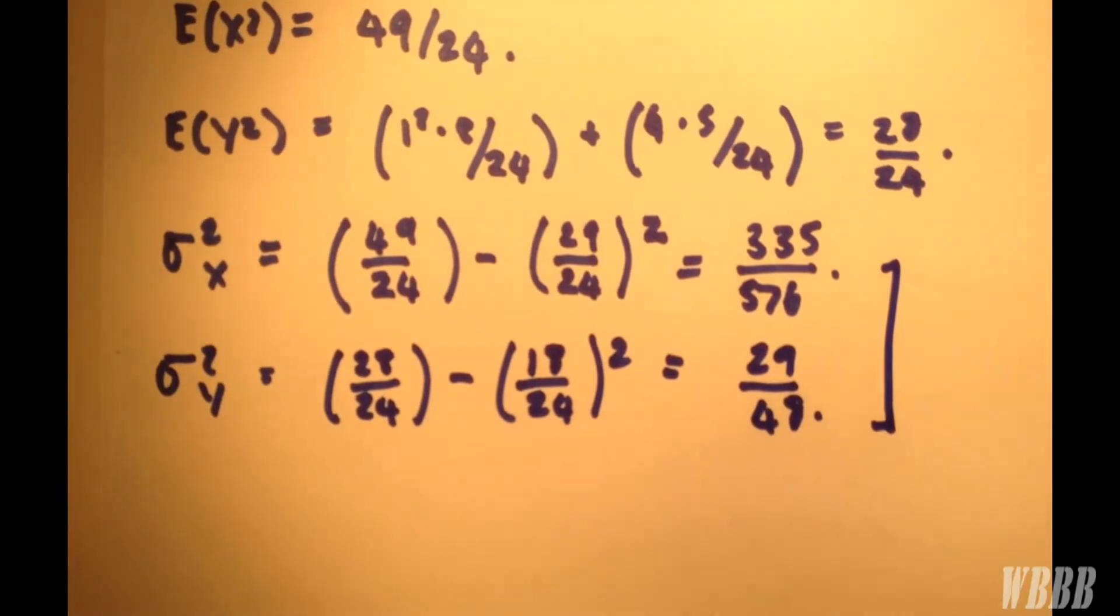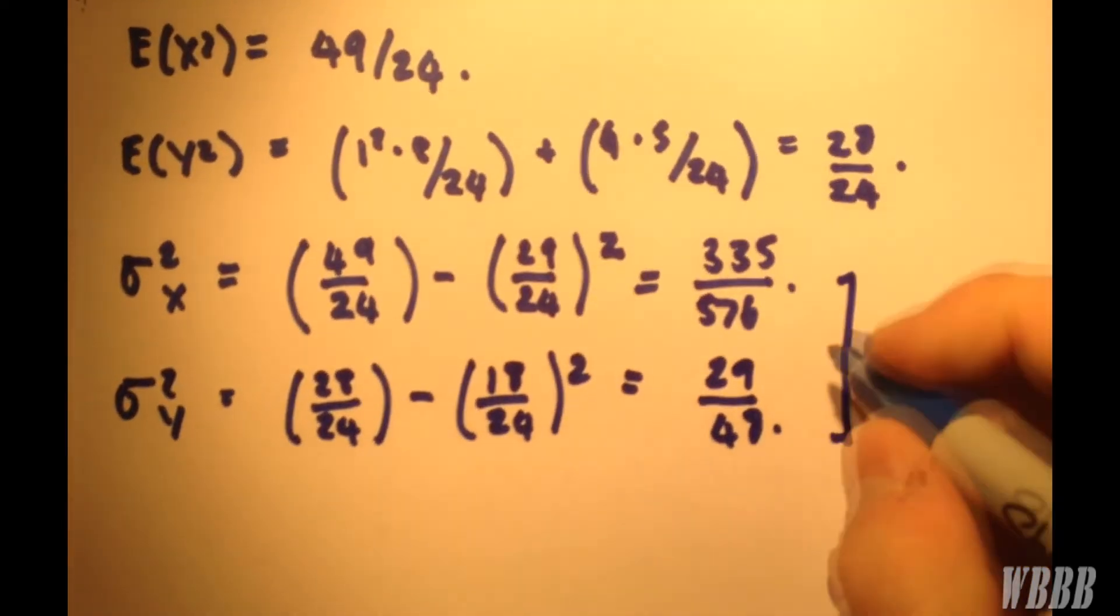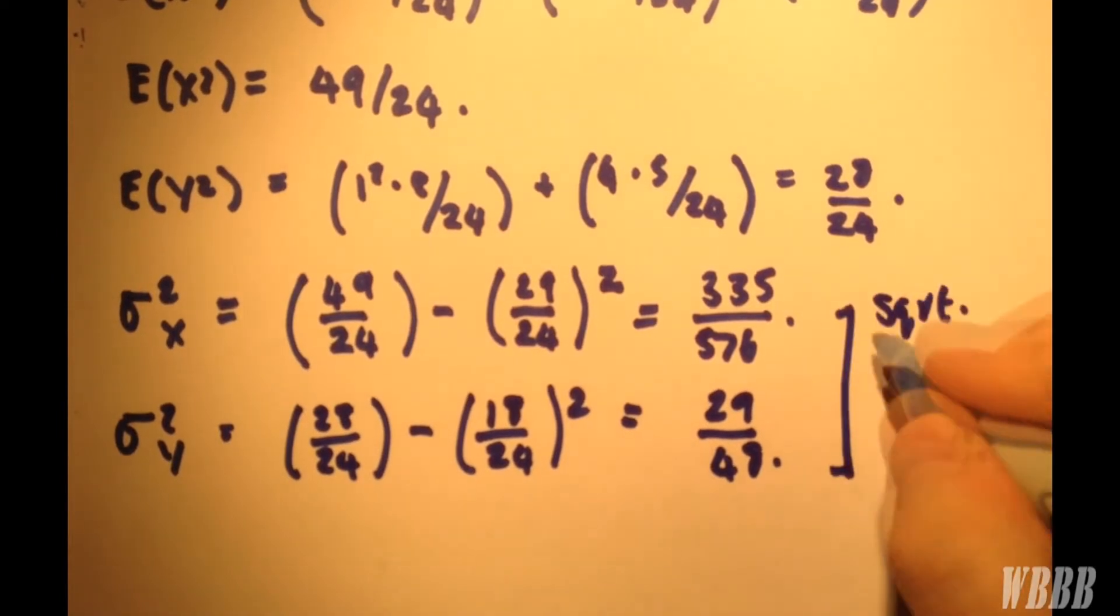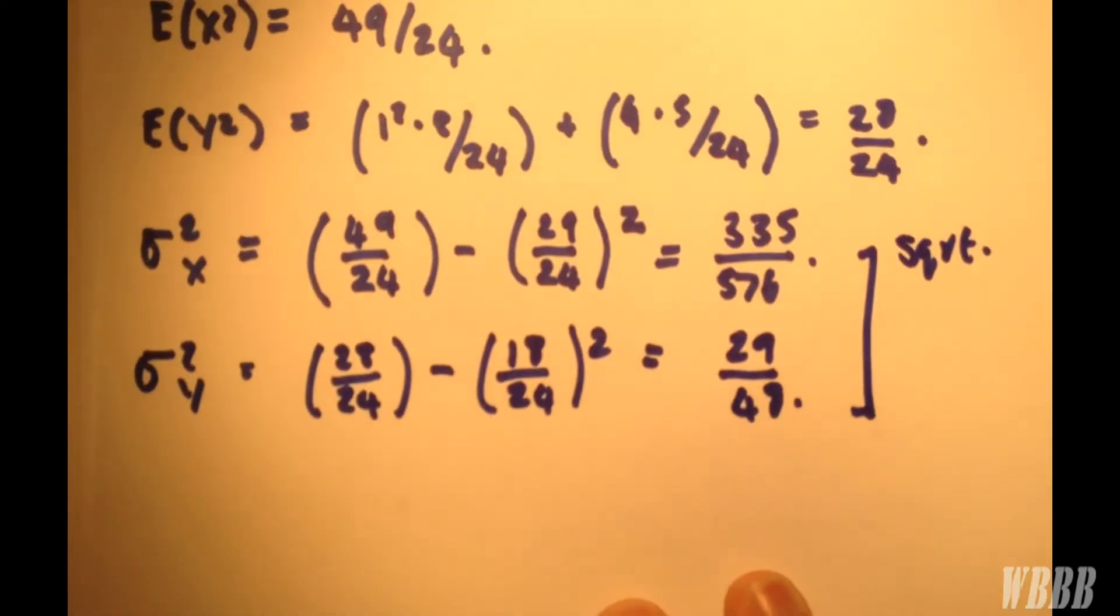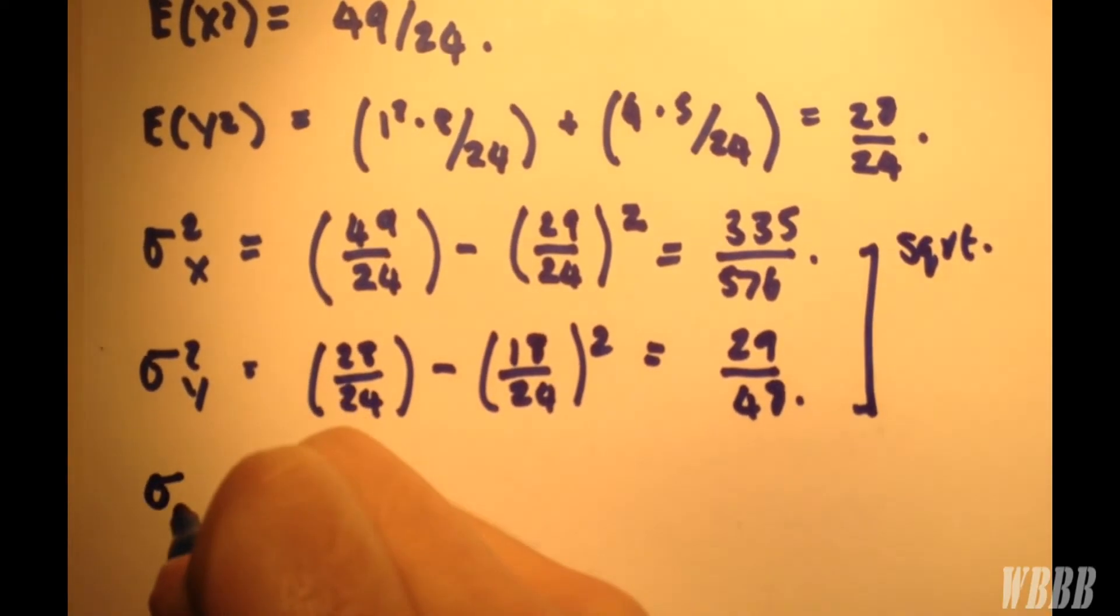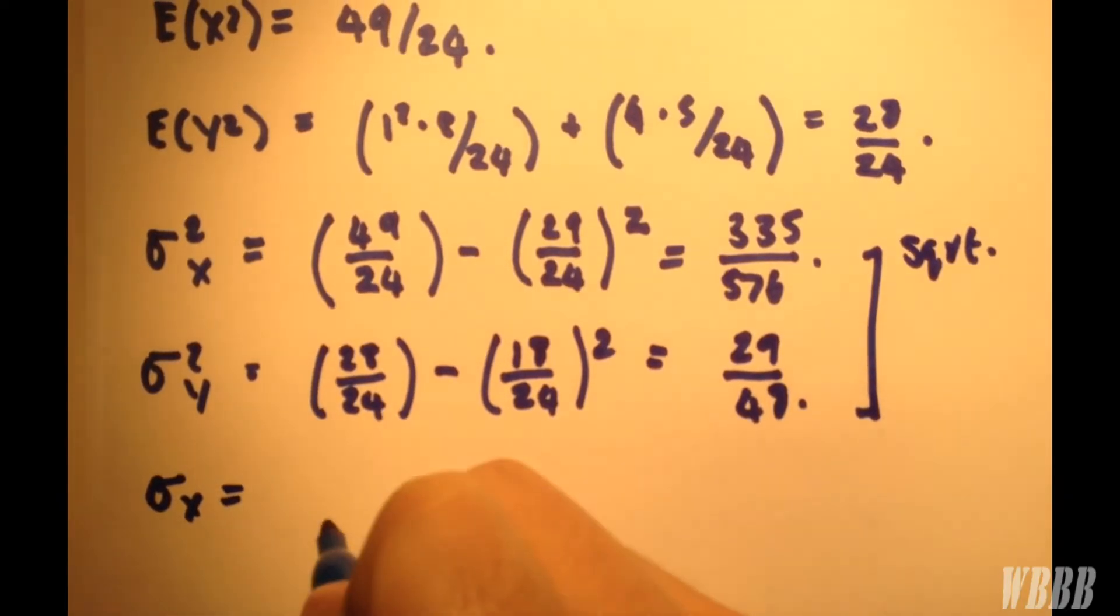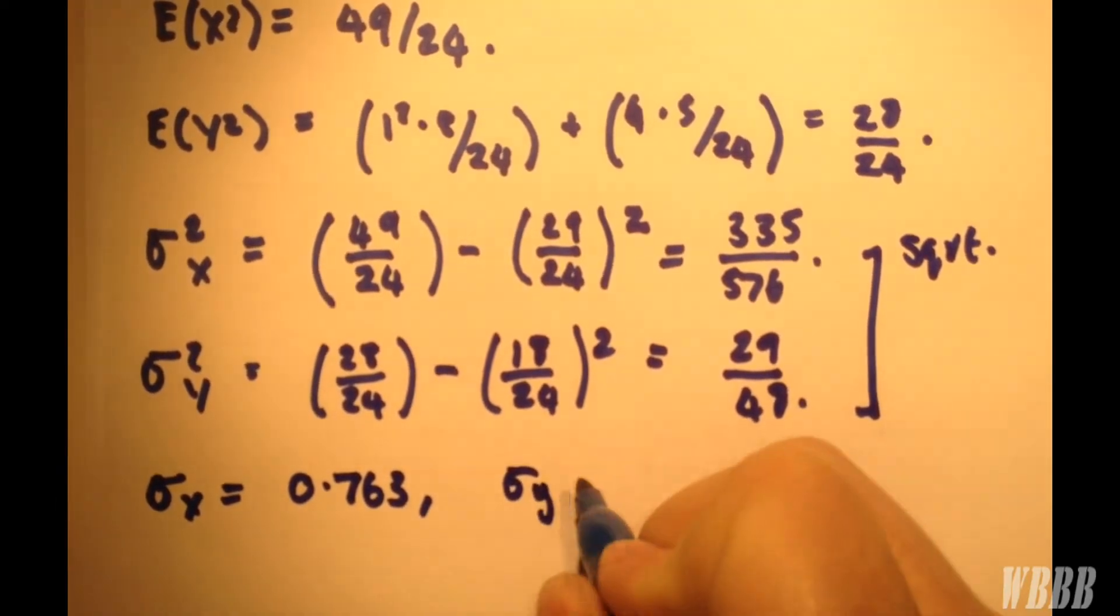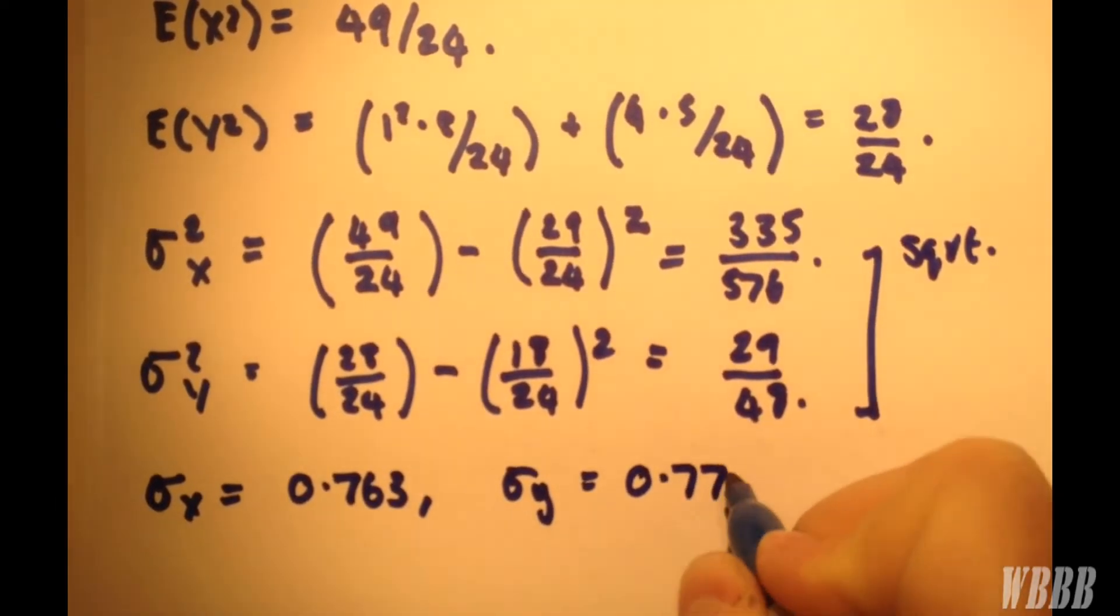So to find our standard deviations, we simply square root this value and this value. And we have standard deviation X equals 0.763, standard deviation Y equals 0.777.